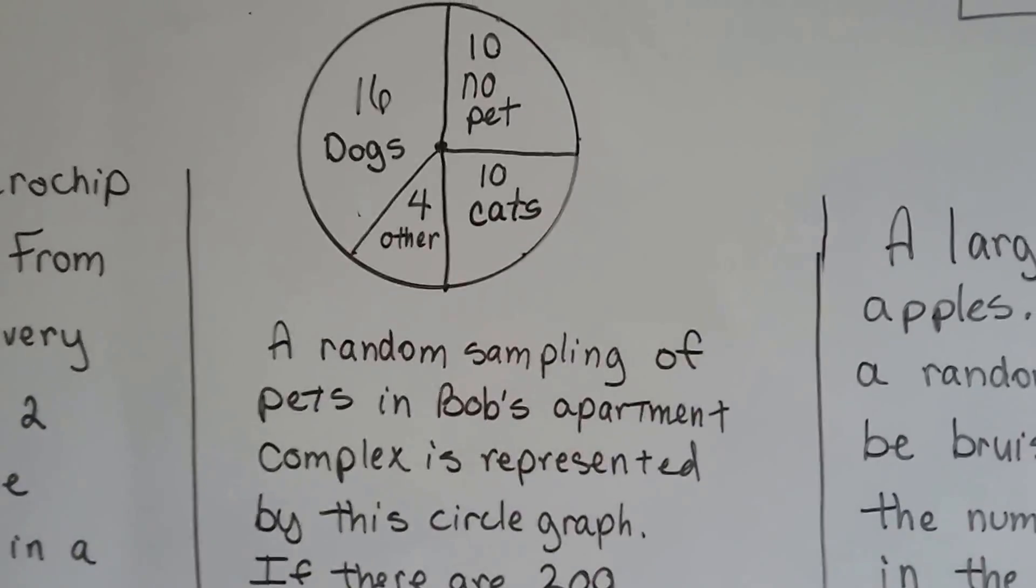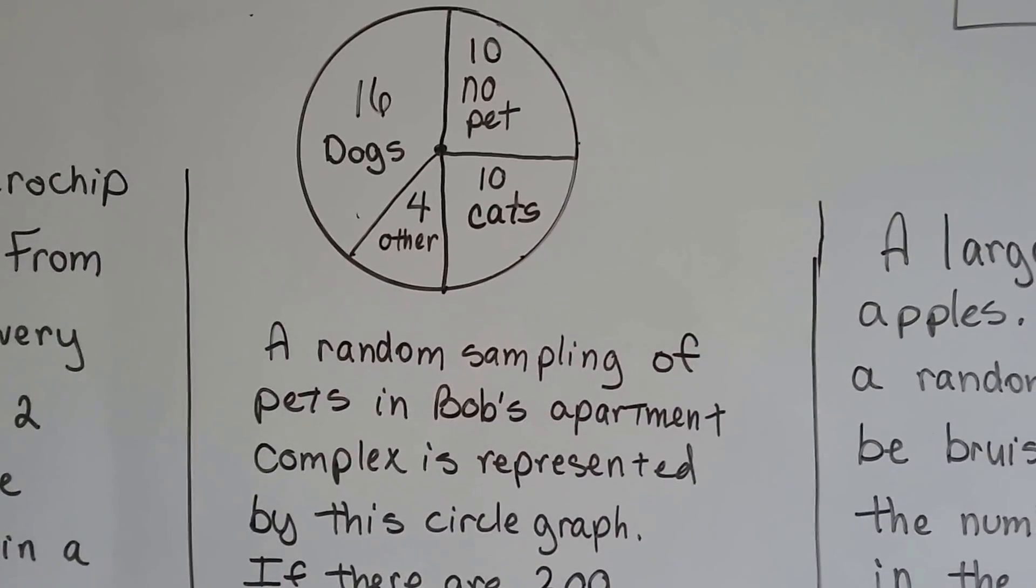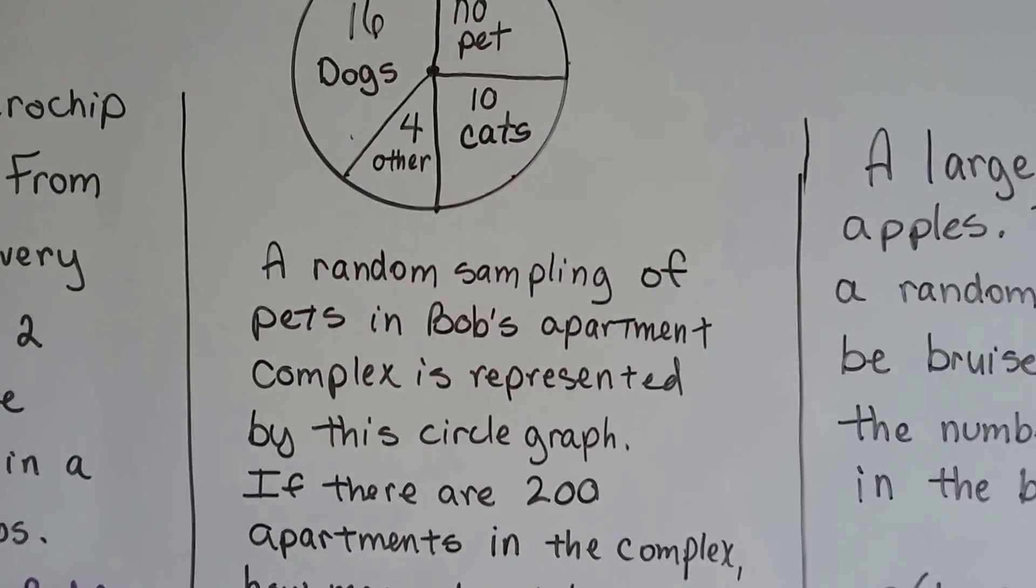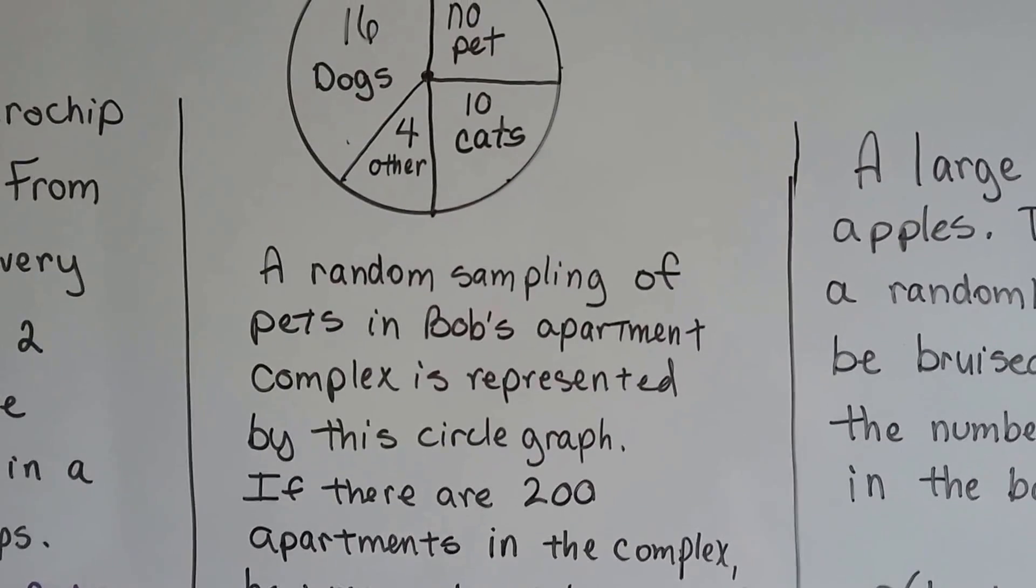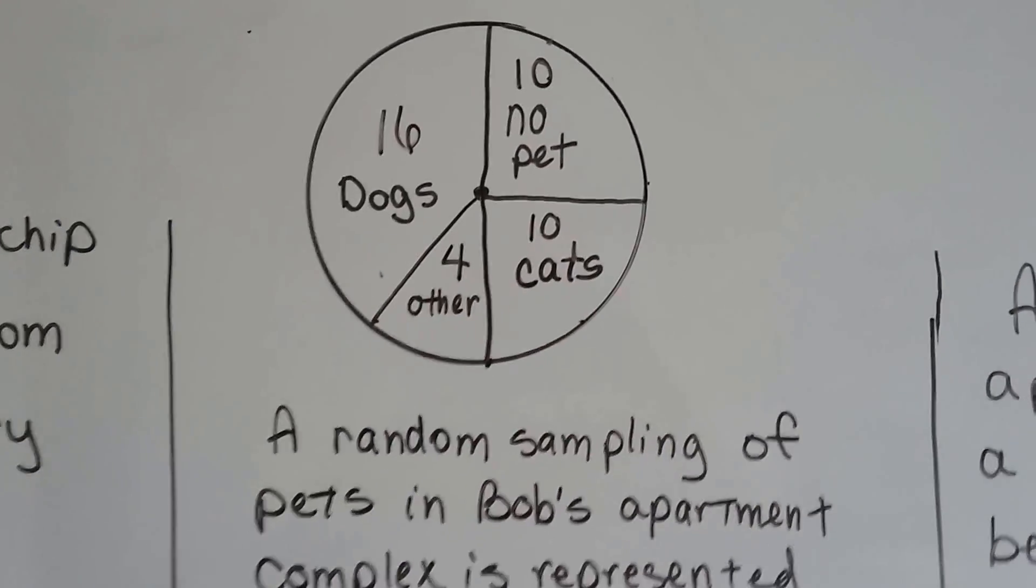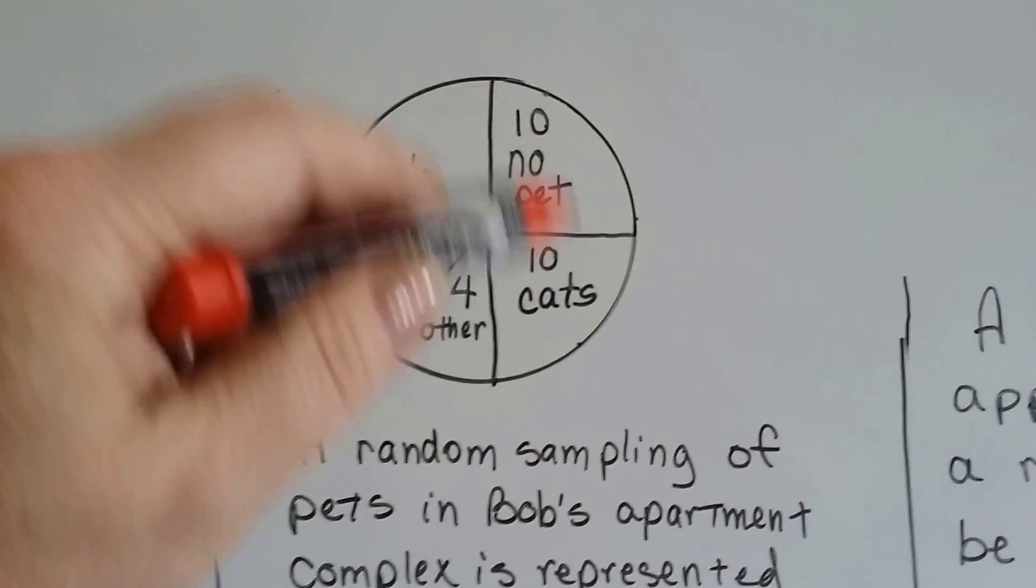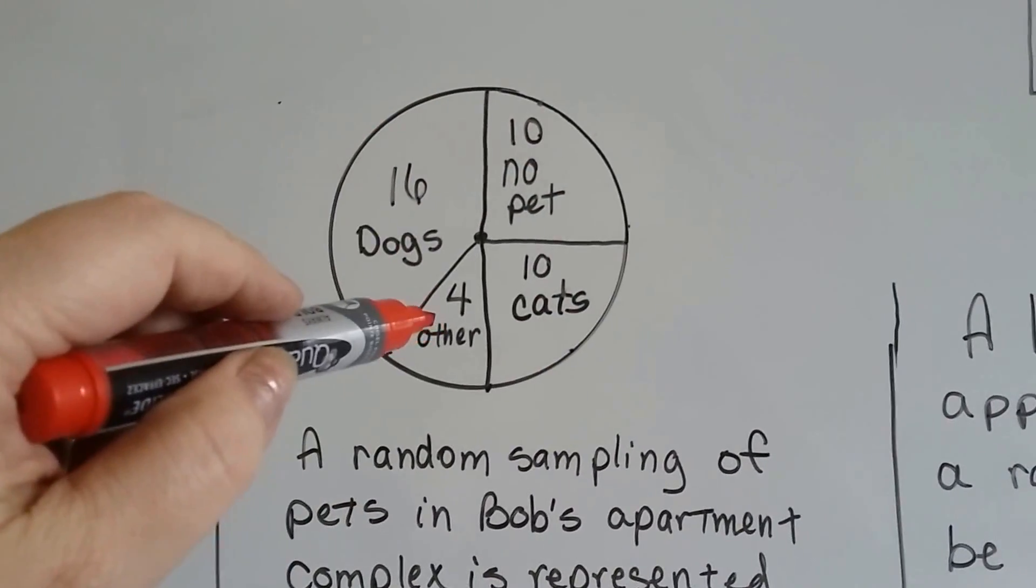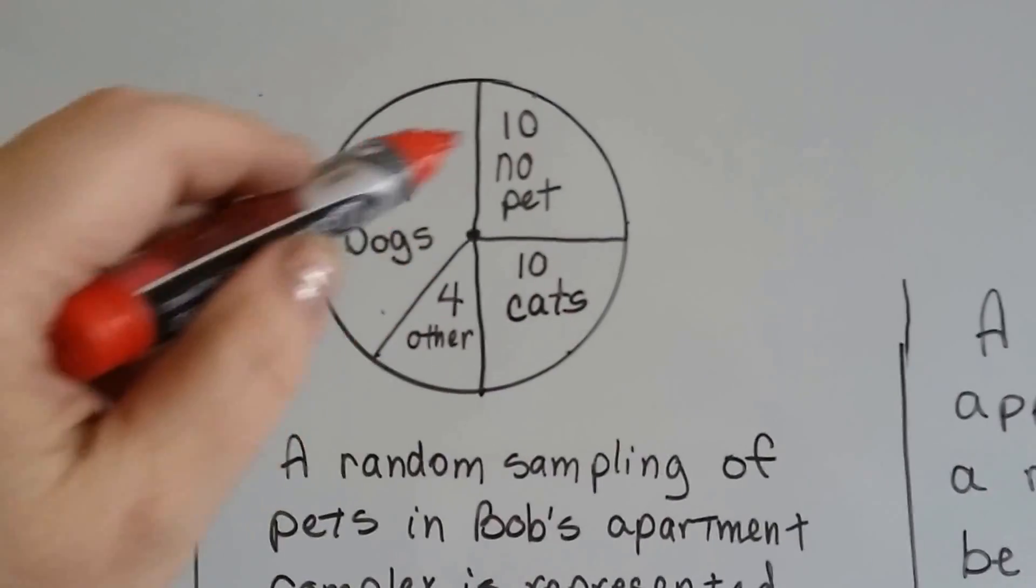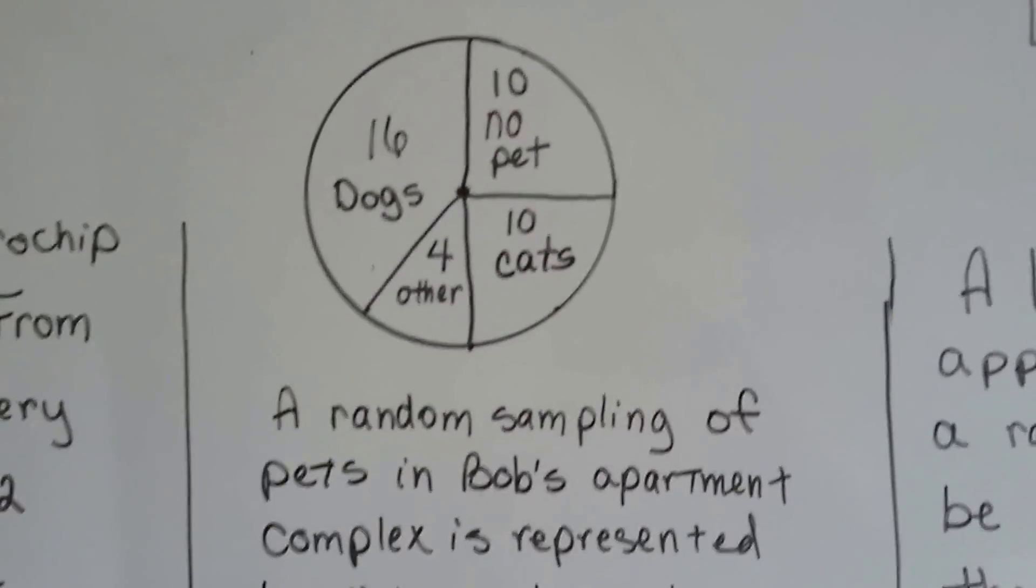A random sampling of pets in Bob's apartment complex is represented by the circle graph. If there's 200 apartments in the complex, how many do not have a pet? It says 10 no pet. We count how many there's total: 16 and 4 is 20, and 10 is 30, and 10 is 40. So out of 40, 10 have no pets.